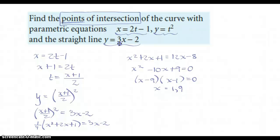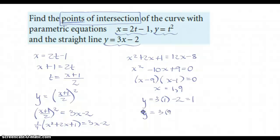We can go back to either function and plug those x-values in to find the corresponding y-values. Plugging in x = 1 gives y = 1, and plugging in x = 9 gives y = 25. So the points of intersection are (1, 1) and (9, 25).